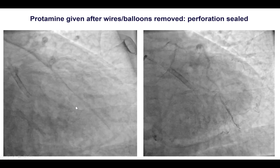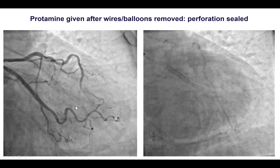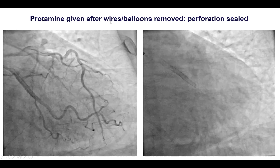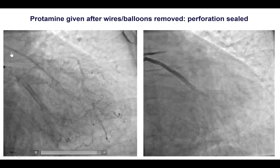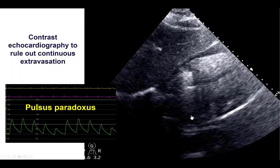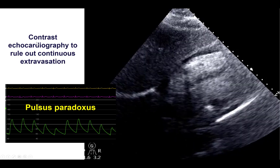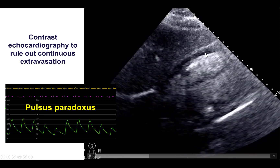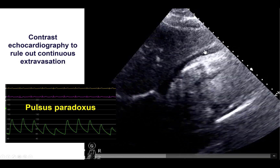We decided to stop attempts for crossing. The question was how to seal the perforation. Because the perforation was fairly small, we decided to reverse the anticoagulation. Before doing that, we removed all the wires and balloons. After removing them and reversing with protamine, we kept the guide in the vessel and did an injection — and the perforation segment was sealed. To confirm this, we injected an echo contrast agent such as Definity, which showed good opacification of the right and left ventricle with no bubbles going into the pericardial space, providing reassurance that the perforation was sealed.